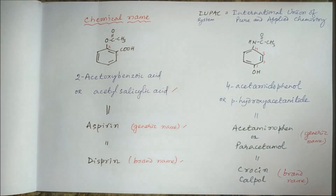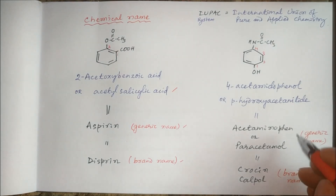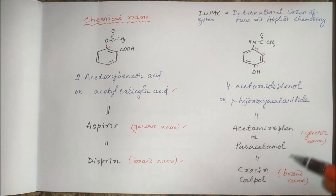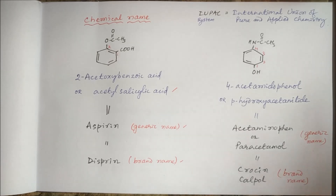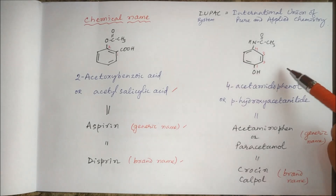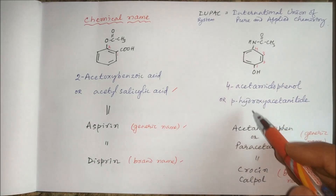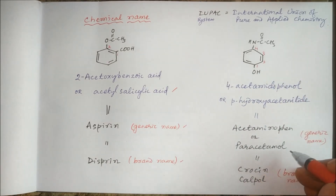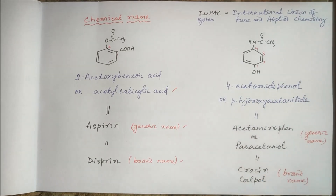This is commonly known as paracetamol or acetaminophen. This is the generic name, and the brand names under which it is marketed are Crocin, Calpol, etc. These are the brand names of this same molecule. So the chemical name is 4-acetamidophenol, paracetamol is the generic name, and Crocin is the brand name.